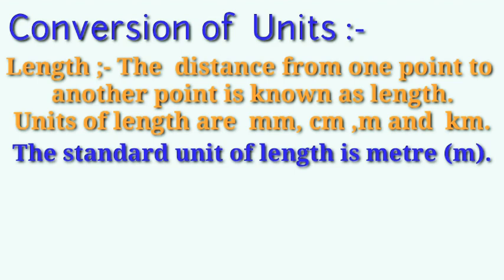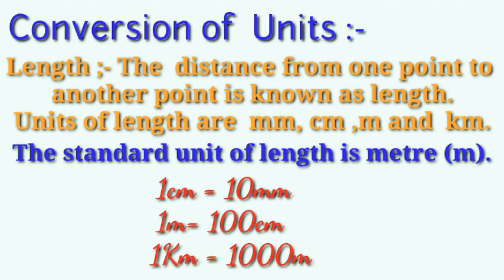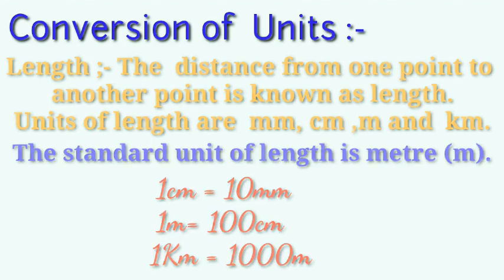The conversion units are: 1 centimeter equals 10 millimeters, 1 meter equals 100 centimeters, and 1 kilometer equals 1000 meters. These are the units we need to convert one unit from another.